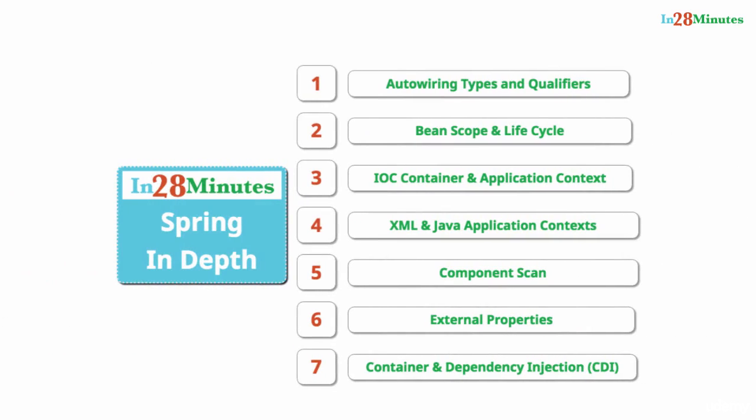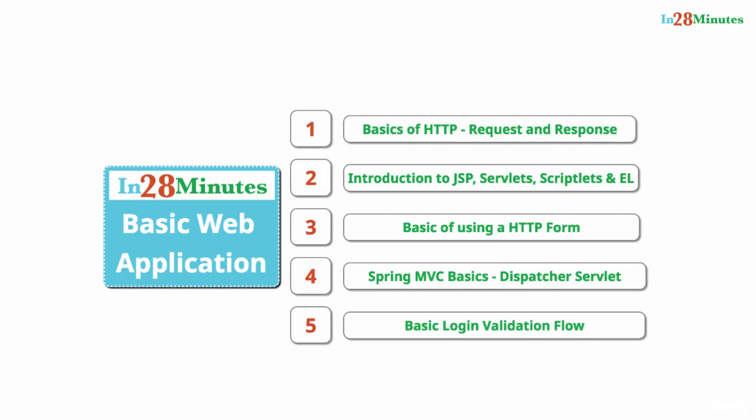After that, we take a deep dive into the Spring Framework — a total of 20 steps where we play with autowiring, bean scopes and life cycles, and different types of application contexts: XML, Java, and others.